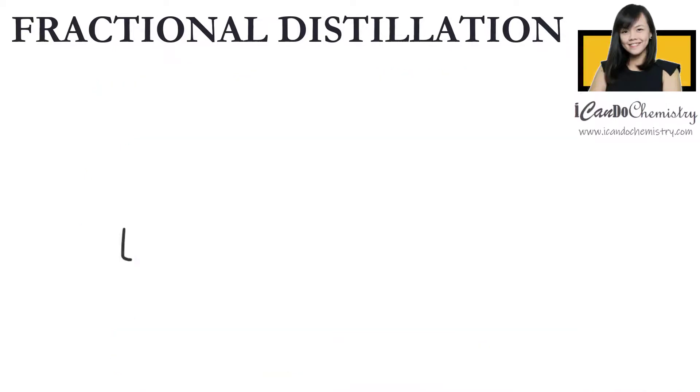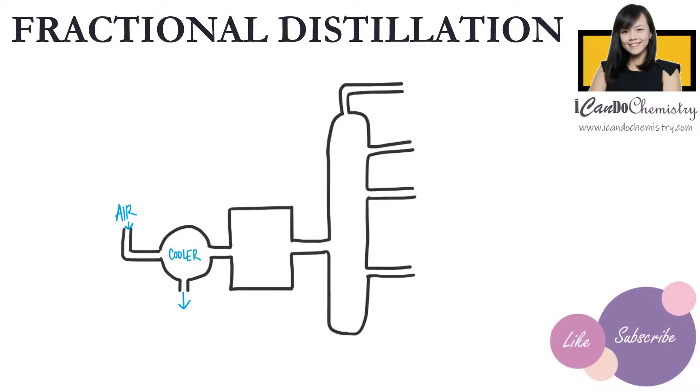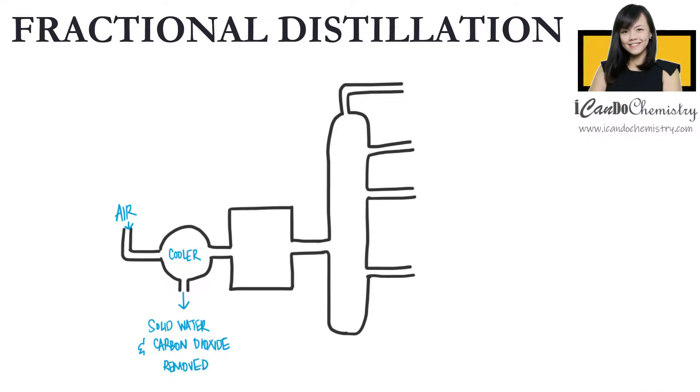Fractional distillation is a very important physical separation method that has industrial applications. We use fractional distillation to obtain individual gases from air. Fractional distillation is used to obtain pure oxygen and pure nitrogen from air. Air is cooled to about negative 200 degrees Celsius. At this temperature, air is a liquid.